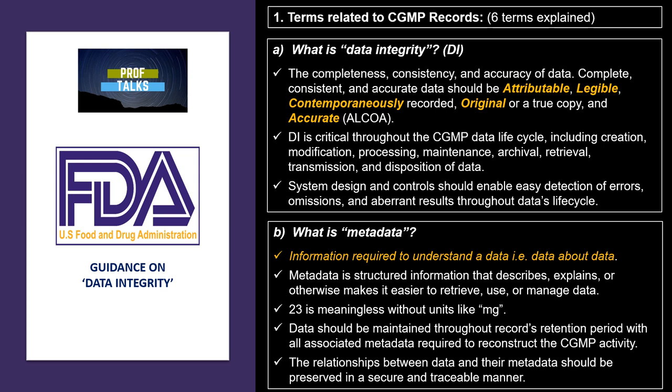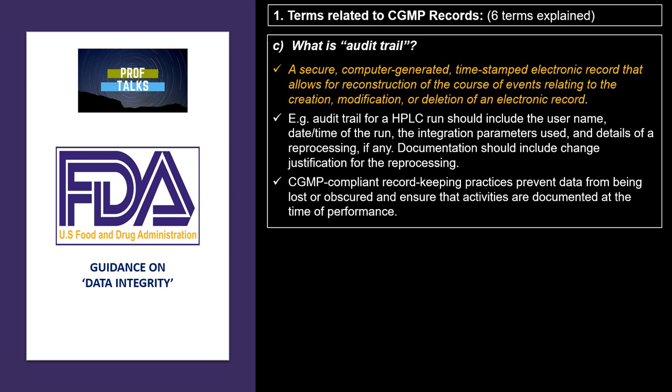The second term is metadata. In simple terminology, metadata is data, or secondary data, which gives meaning to a primary data — referred to as data about data. For example, if a weight is mentioned as just 23 without any units, it doesn't have any meaning. The units are the metadata. The guidance gives the example of 23 mg, where mg (milligrams) is the metadata giving meaning to the data. The requirement for control and storage of metadata is the same as for data, and it should be stored in a format that maintains its relationship with the primary data through the entire retention period.